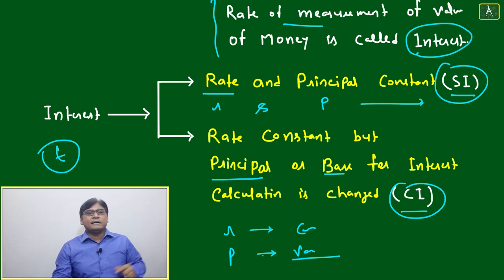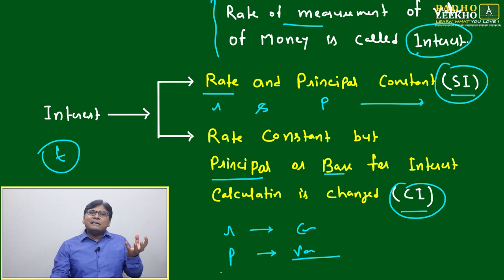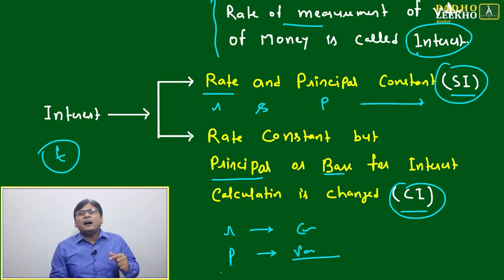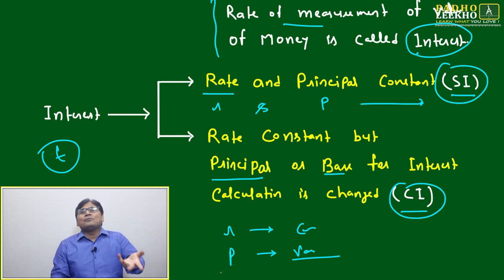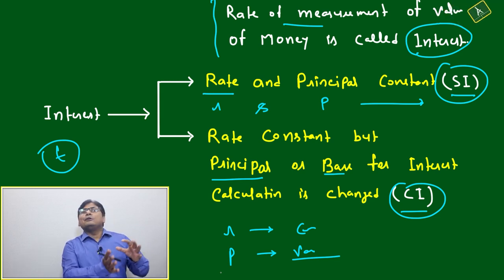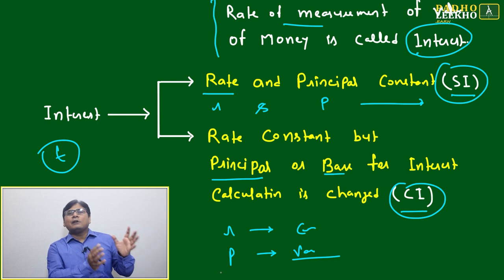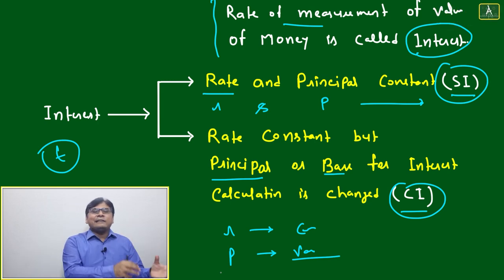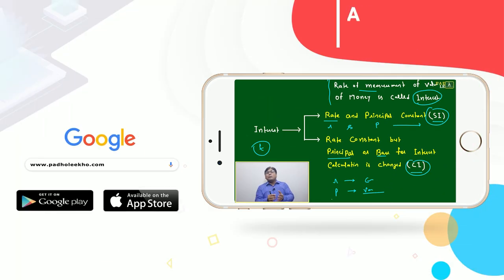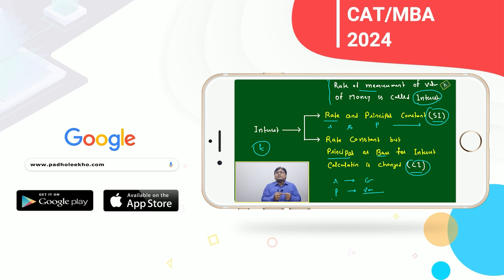When principal is variable and rate is constant, it is called Compound Interest. Another way to think about it: in CI, you are earning interest on interest. In Simple Interest, the interest earned does not get added to the principal. But in Compound Interest, whatever simple interest you earned in one year is added to the principal, and next year's interest is calculated on that new principal. So compound interest is essentially interest over simple interest.